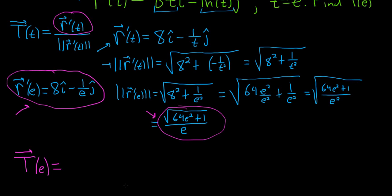So what you can do is you can multiply by the reciprocal, okay? So you can write it like this, 8i hat minus 1 over e j hat. And then you can put this out here and flip it. So it'll be e over the square root of 64 e squared plus 1. Because we're dividing by this, so you can multiply by the reciprocal.